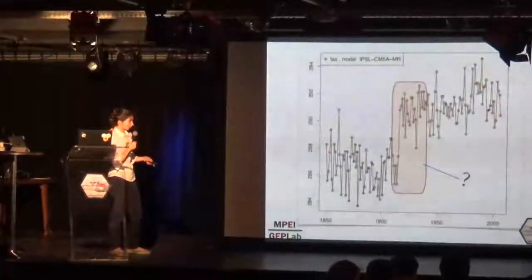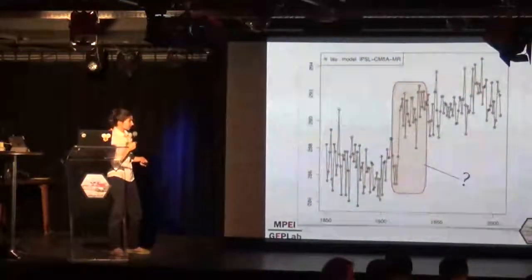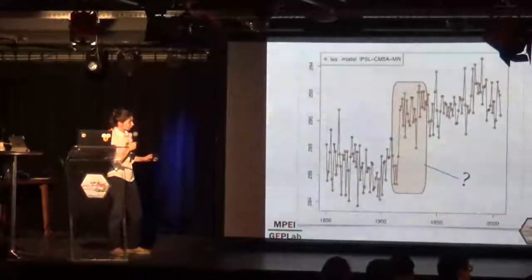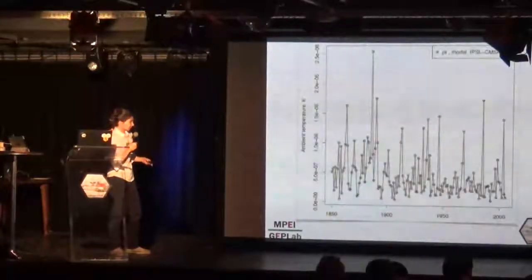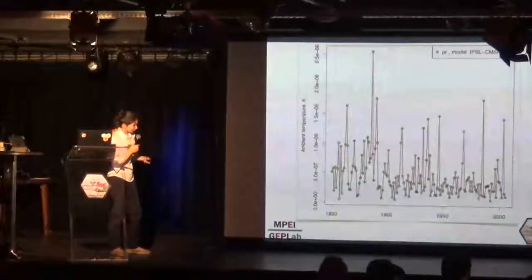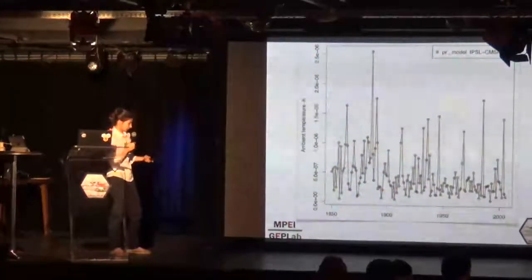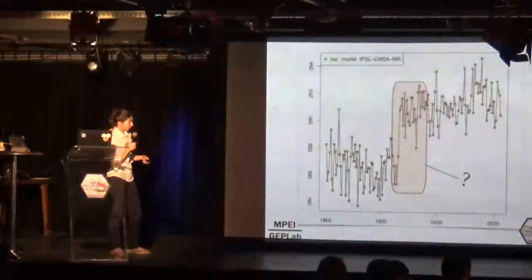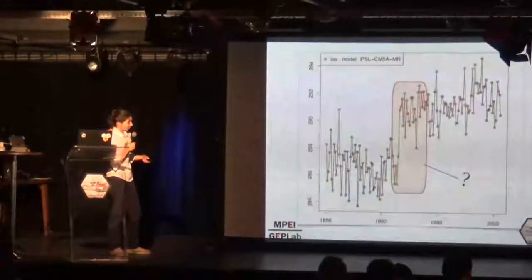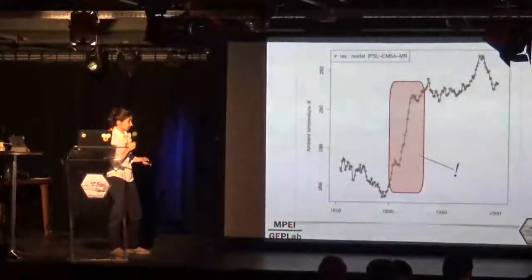But if we look at the temperature in the same area, the picture is not so perfect. Precipitation plot looks very much like truth. Precipitation has high variance and gamma distribution. Temperature is much more predictable. Seeing this plot, we may understand that something went wrong.